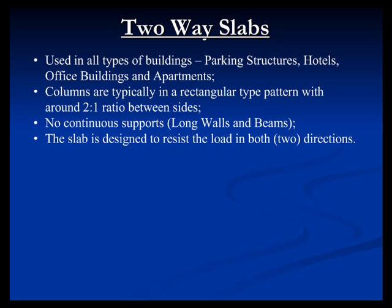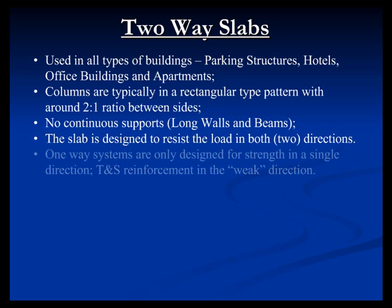Obviously, you're going to have elevator shafts and shear walls potentially, but basically there's no primary wall and beam system. The slab is designed in two directions to support loads. This is different than a one-way system where in the weak direction you're only designing for temperature and shrinkage, effectively for crack control. So the major difference between a one-way slab design and a two-way is you're designing the slab in two principal directions rather than just one.